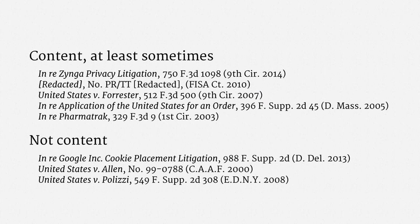I've pulled together some case law, roughly divided by courts that think a URL is sometimes content and courts that seem to think a URL is not content. I don't at all expect you to chase down these citations — they're just for your convenience, if you want to do some further digging. There is one point I'd like to emphasize: much of this case law arises in the context of consumer privacy litigation. The very same provisions of ECPA that restrict the government also restrict private businesses. Courts have generally not been very sympathetic to consumer privacy class actions, but in the process of throwing out civil lawsuits, courts have taken some pretty narrow views of URLs as content. Those narrow views subsequently apply when the government seeks a pen trap order.